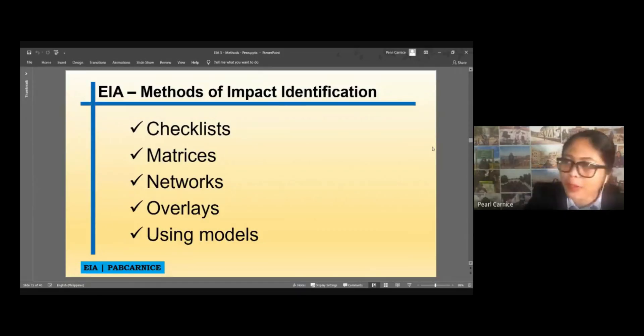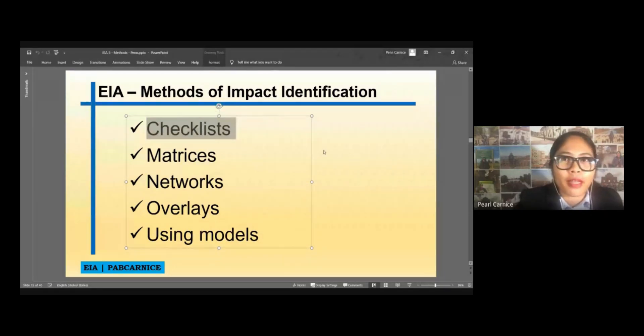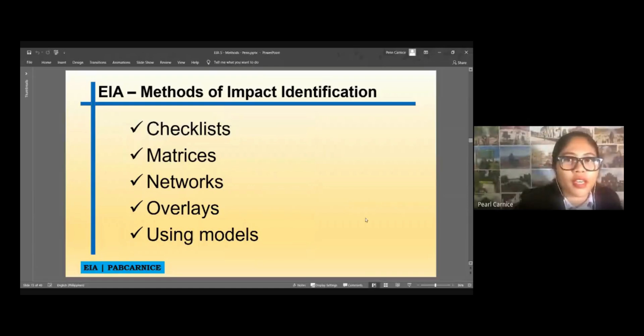So, we actually have, this is actually the methods of impact identification. So, of course, first is the checklist. The methods of impact identification is... I hope that's better. I hope you can see my slides already. We have methods of impact identification. Of course, we have the checklists, the matrices, networks, overlays, and of course, we can also use, using models.